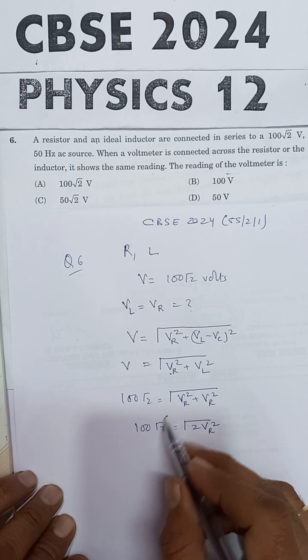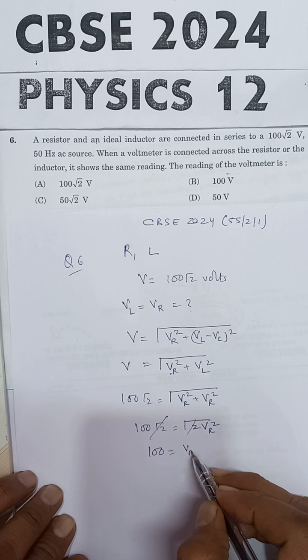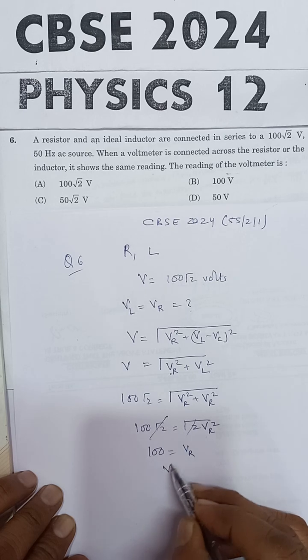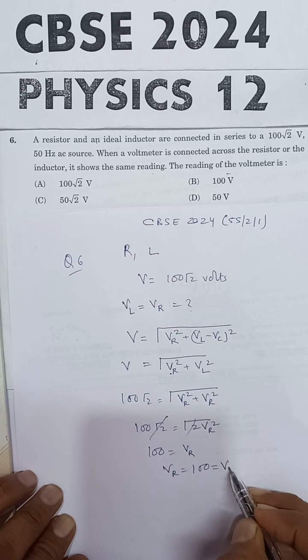Root 2 cancels out, and 100 equals the square root of VR square, which is VR. So the value of VR is equal to 100.